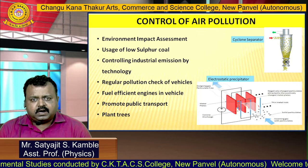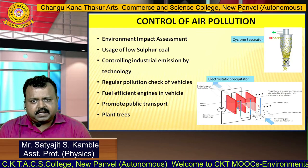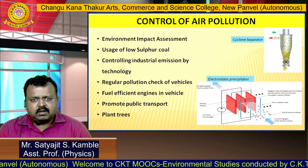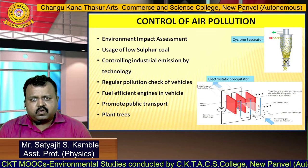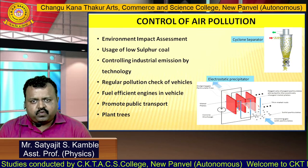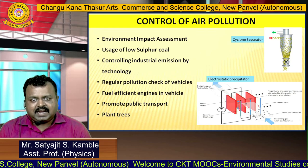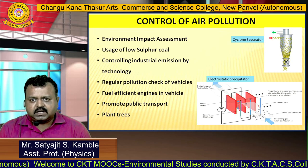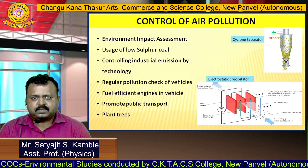Apart from technology, we need to control vehicular pollution, which can be done by regular pollution checks. We need to use fuel-efficient engines in vehicles and promote public transport in order to control air pollution. We also need to plant more trees. We can also reduce air pollution by shifting towards renewable energy sources like solar energy, wind energy, etc. Thank you.